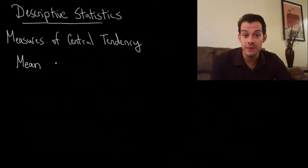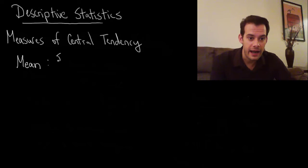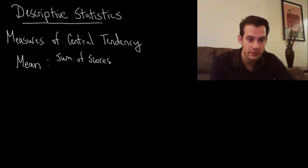The mean is calculated by adding up all of our scores — that's the sum of scores — divided by the number of scores.